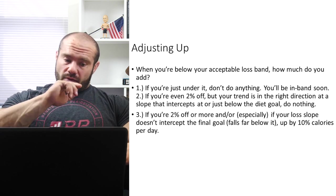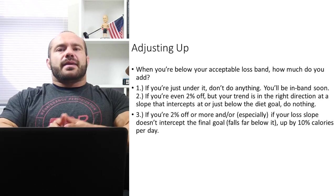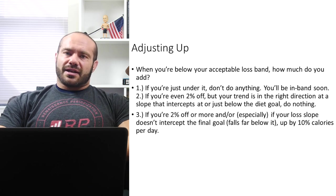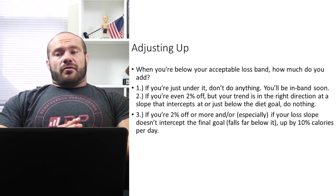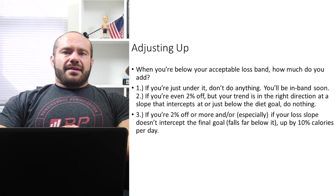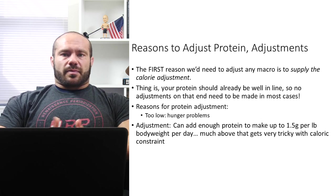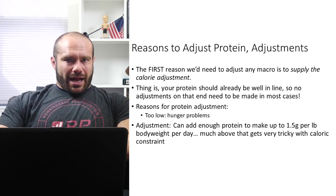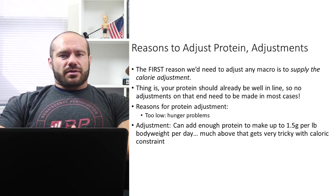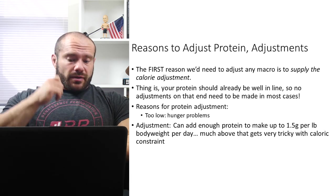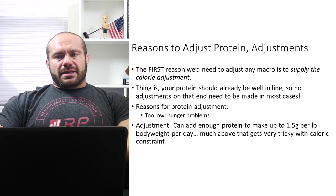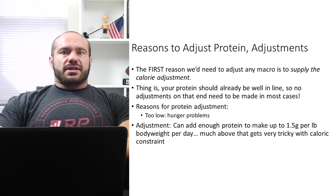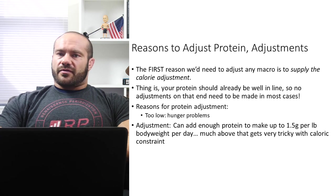So when we're making these adjustments, where do we take them from — protein, carbs, or fats? The answer depends on a couple of things. The reason we're cutting any macro is primarily to supply the calorie adjustment. We're not cutting proteins because you're eating too much protein; we might cut proteins in order to cut your calories, because that 200 calories or whatever needs to come from somewhere. That said, your protein should already be well in line — you should be eating pretty much exactly how much protein you need. So almost never are we going to cut calories from protein. We're going to cut them either from fats or carbohydrates.